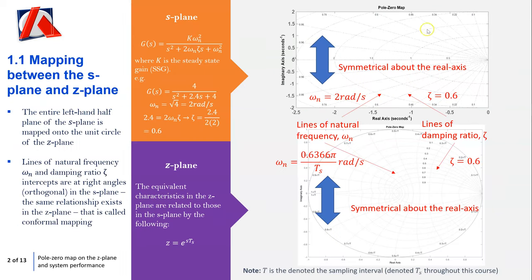On this slide we have the s-plane, which you should be familiar with — this is the place where we map on poles and zeros. Looking at the standard form of a second order transfer function, where k is the system gain, ω_n is the natural frequency, and ζ is the damping ratio. Along the s-plane you have the imaginary axis, real axis, and the origin at zero. Going away from the origin are lines of damping ratio — zero, one — increasing as you go to the real axis, and lines of natural frequency which also increase as you go away.